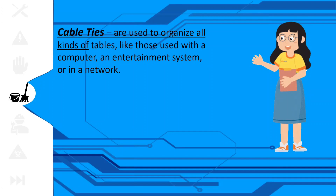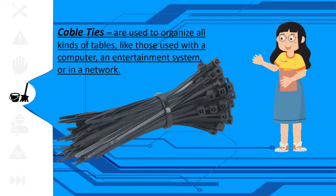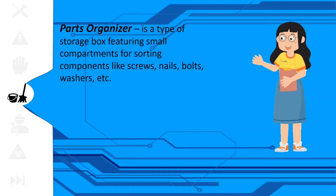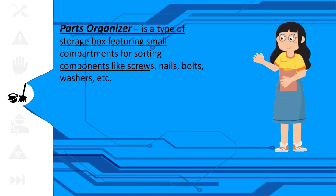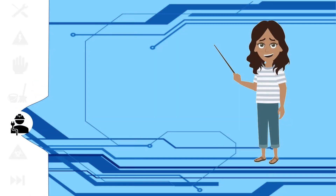Cable ties are used to organize all kinds of cables, like those used with a computer, an entertainment system, or in a network. Part organizer is a type of storage box featuring small compartments for sorting components like screws, nails, bolts, washers, and others.